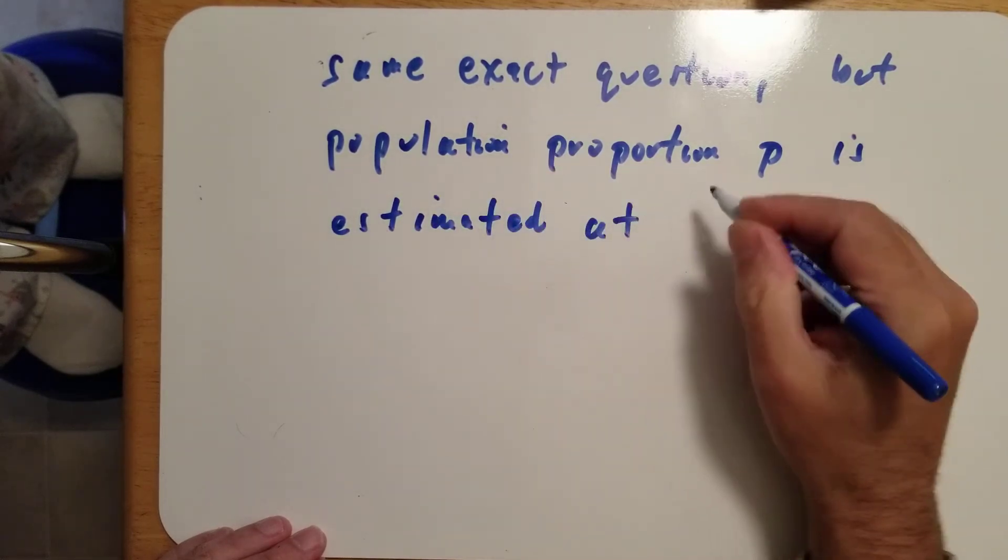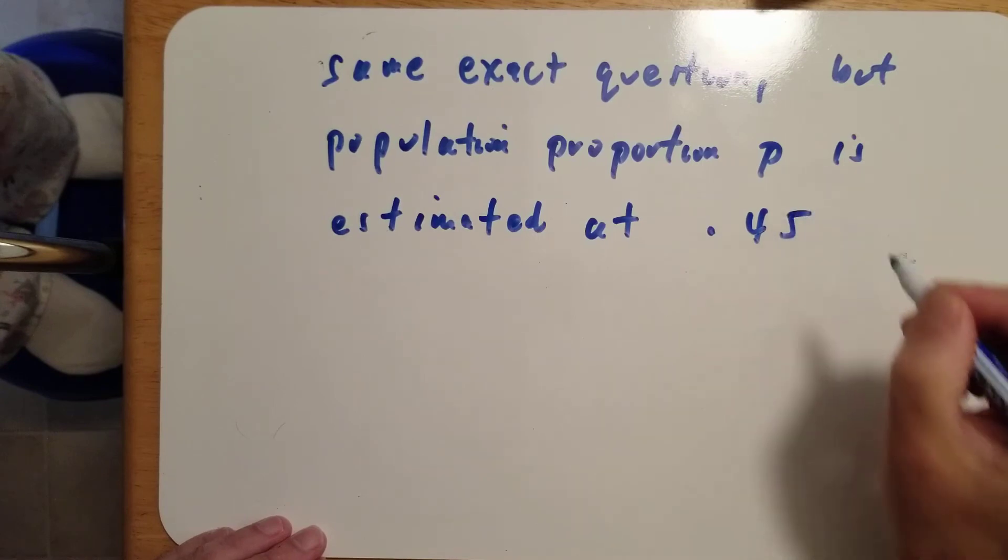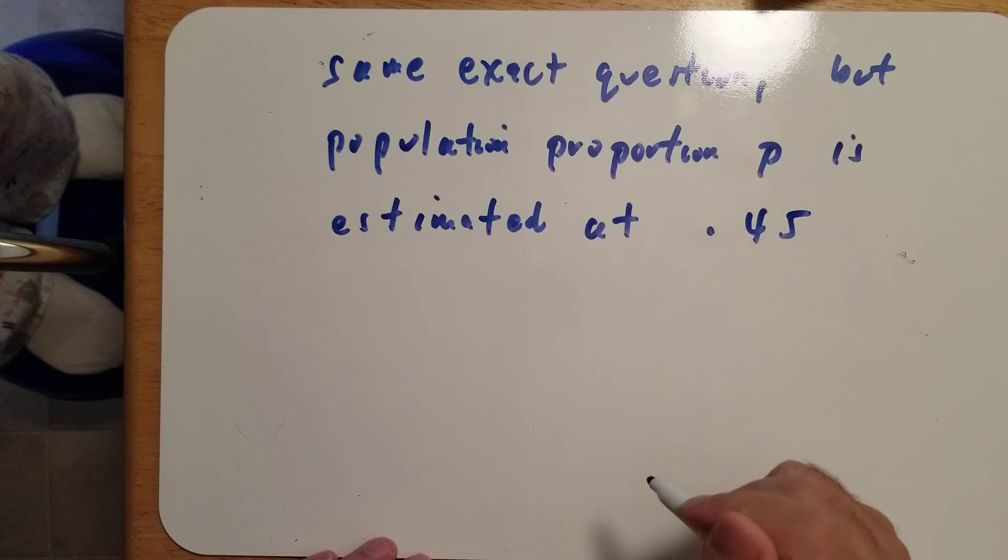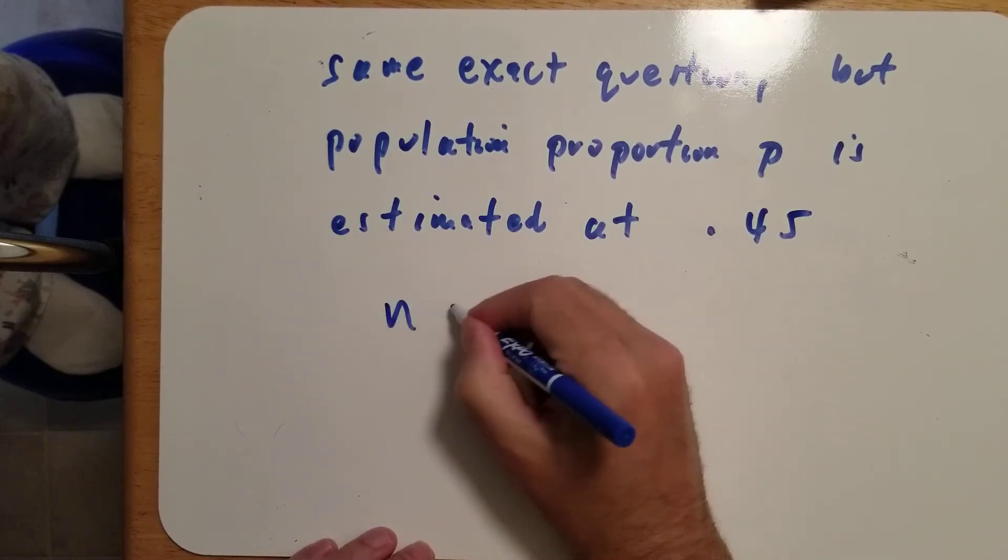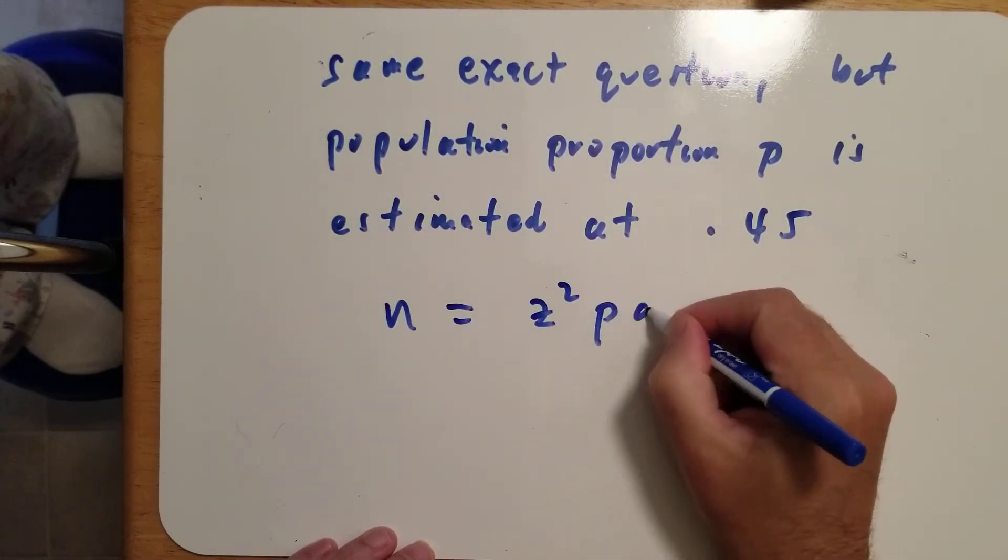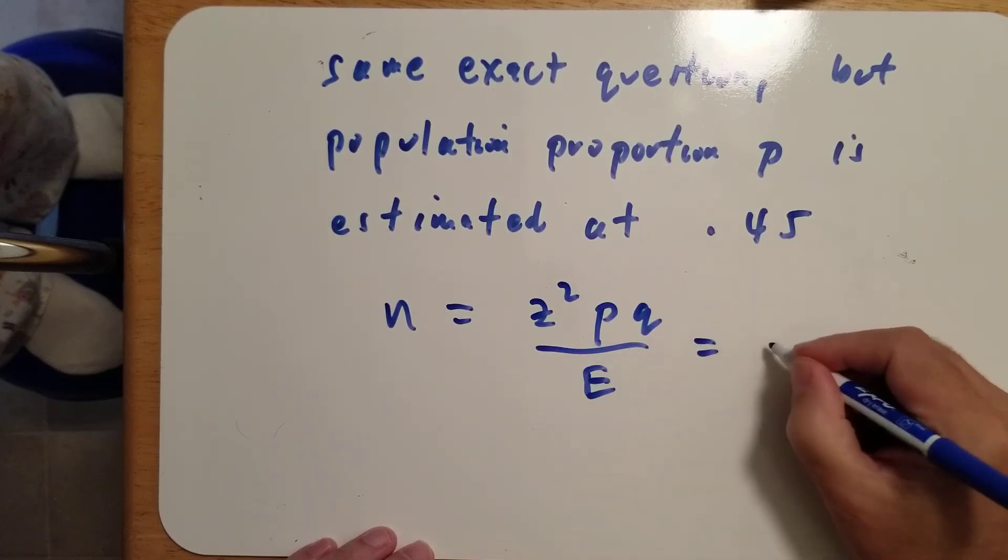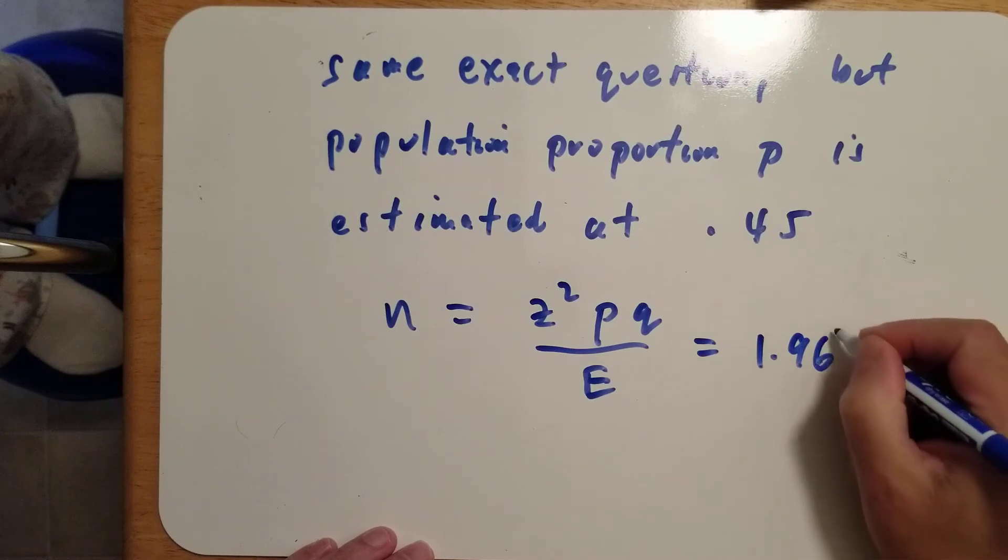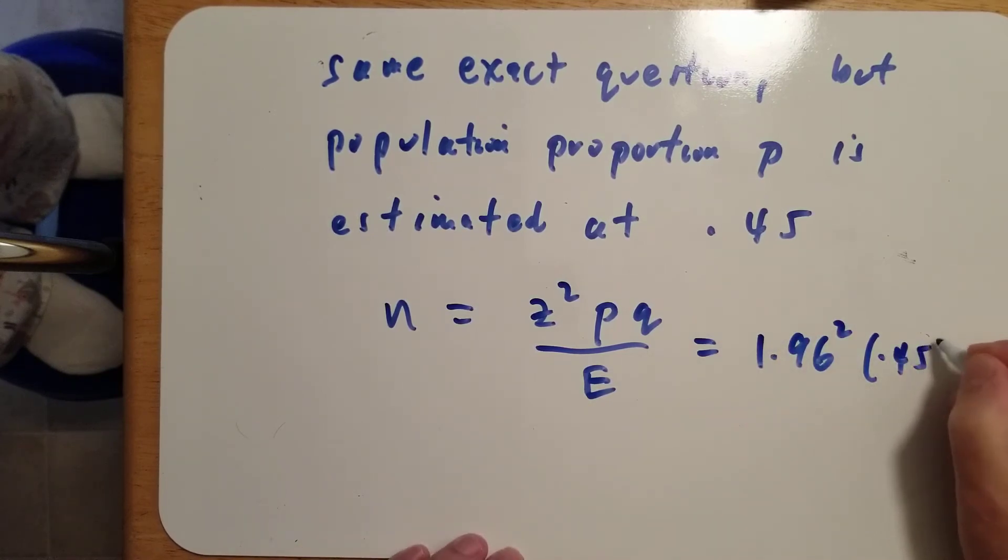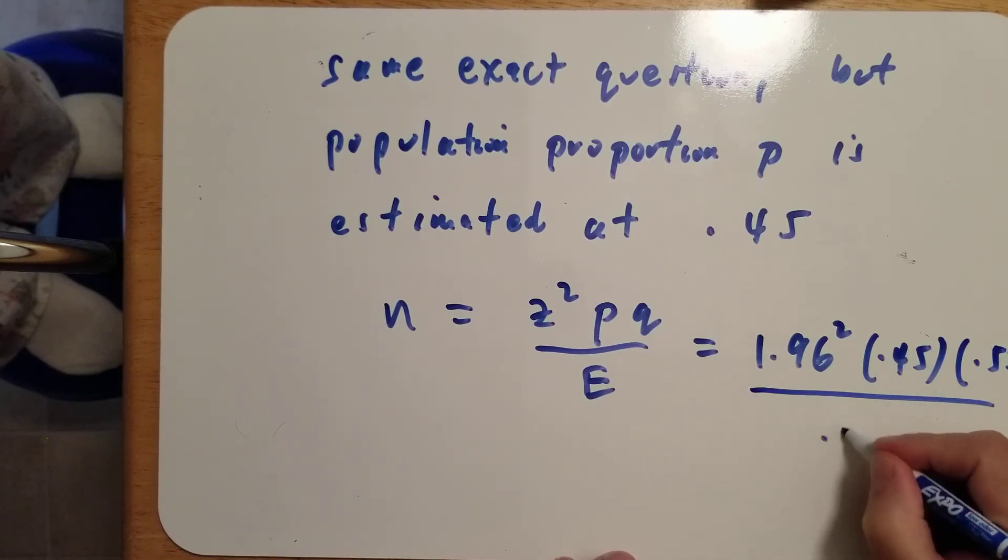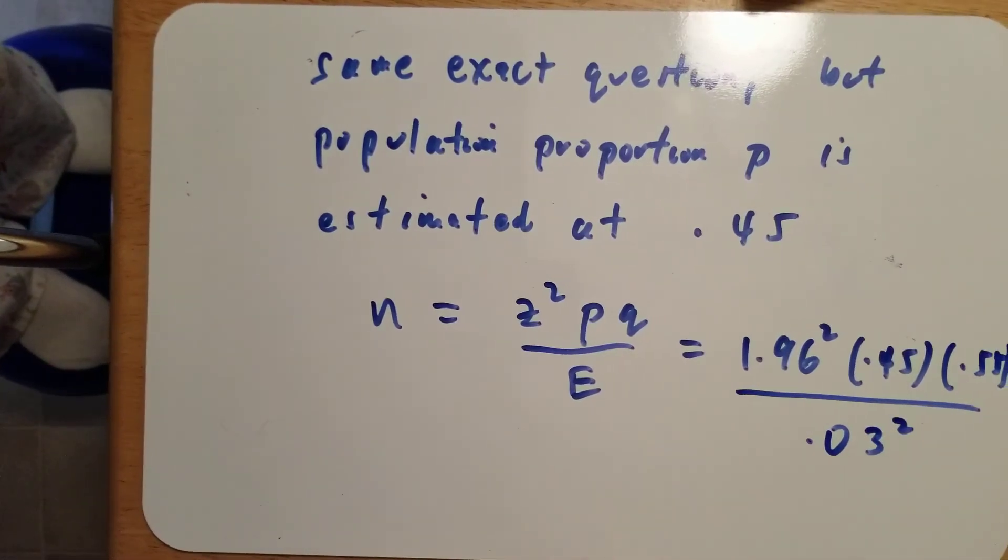In this case, we use P as 0.45 in the formula. N is still Z squared PQ over E squared. Z squared is still 1.96 squared. P is now 0.45. Q is 1 minus P, which is 0.55. And E is still 0.03 squared.